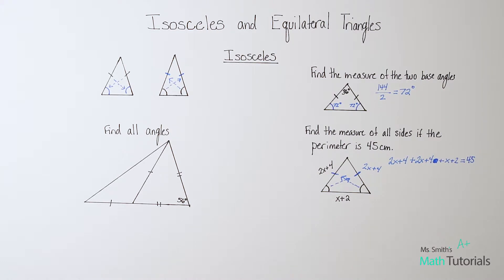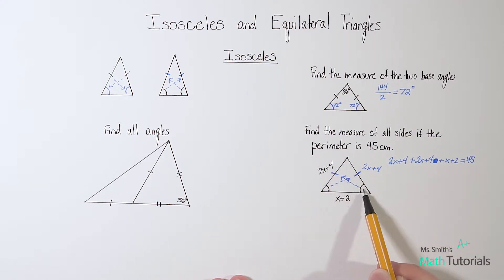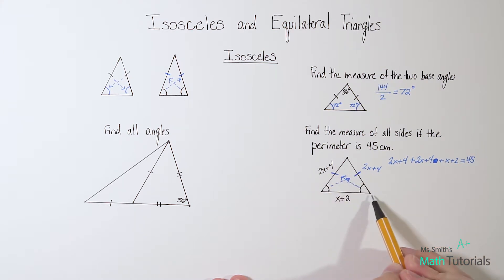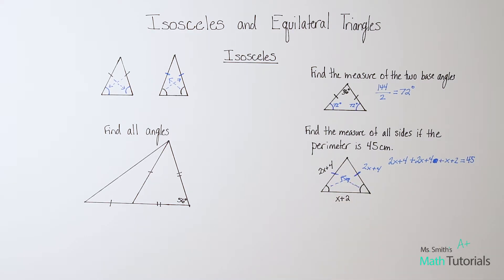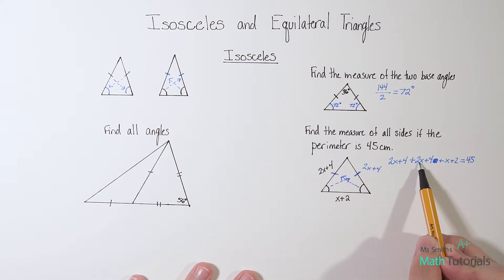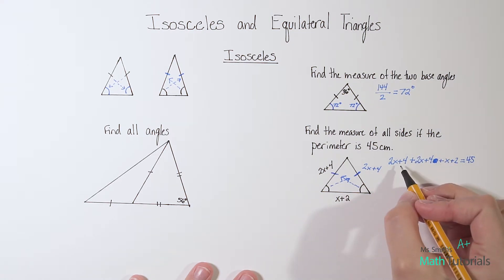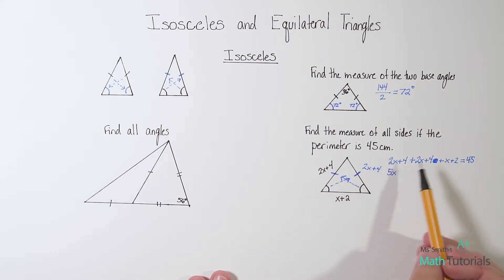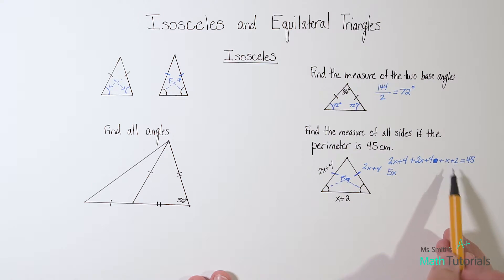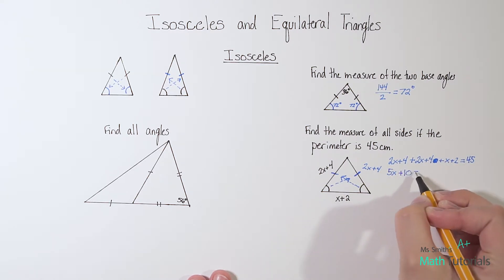The biggest student error I see is when students want to say it equals 180 because they get caught up in thinking triangles mean 180. The interior angles add up to 180, not the sides — the sides could add up to almost anything. It equals the perimeter. So combining like terms: 2x + 2x + x gives me 5x, and 4 + 4 + 2 gives me 10. So 5x + 10 = 45.